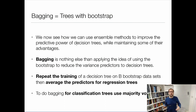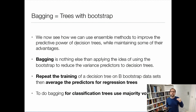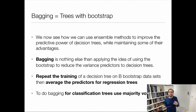All I do is bootstrap from my data b times, and for each bootstrap I fit a regression or classification tree. Then the output of the model is the average over all the individual regression and classification trees.